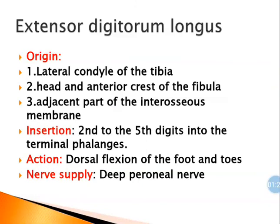The next muscle is extensor digitorum longus. It takes origin from the lateral condyle of tibia, the head and anterior crest of fibula, and the adjacent part of the interosseous membrane. It is inserted into the second to fifth digits, that is into the terminal phalanges. Its action is dorsiflexion of the foot and also the toes. The nerve supply is the deep peroneal nerve.